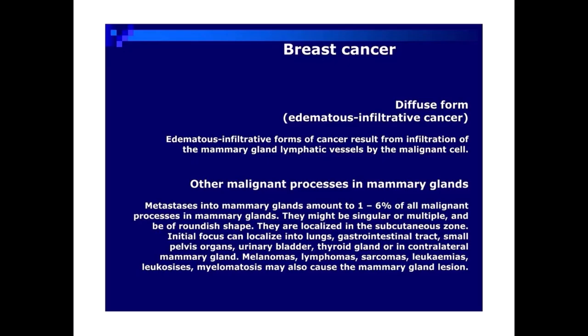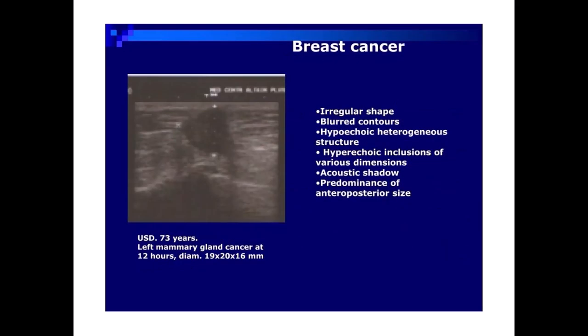Leukosizes and myelomatosis may also cause mammary gland lesions. Ultrasonic image: 73-year-old patient, left mammary gland cancer at 12 hours, diameter 19×20×16 millimeters. Irregular shape, blurred contours, hypoechoic heterogeneous structure, hyperechoic inclusions of various dimensions, acoustic shadow, predominance of anteroposterior size.